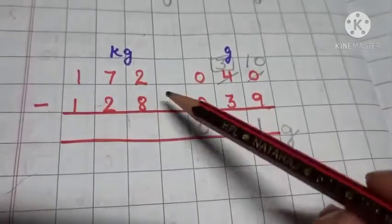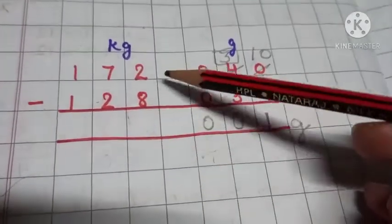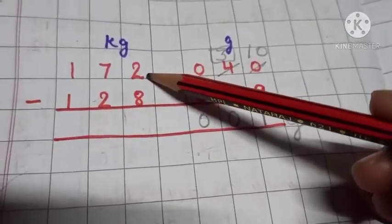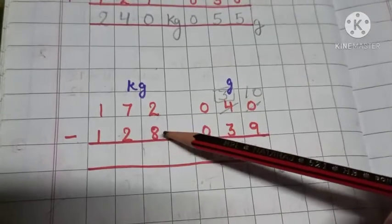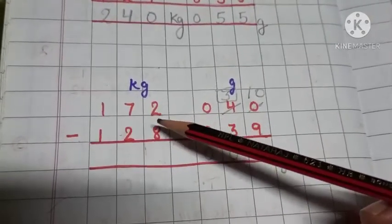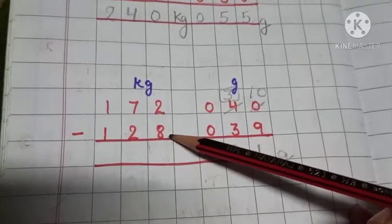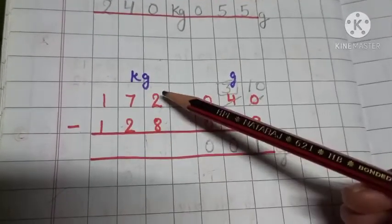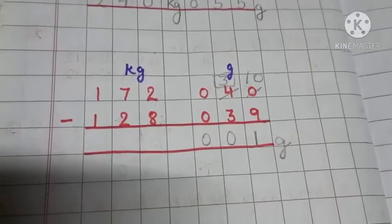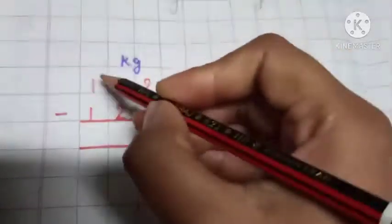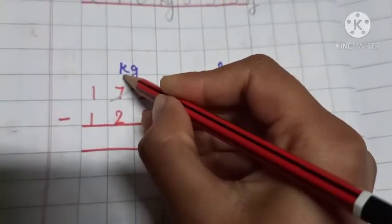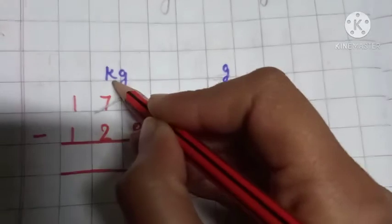Now, let's subtract the values of kilogram. First, we subtract 8 from 2. Look here. The 8 is greater than 2. It means the value at the bottom is greater than the value on the top. So here, we need to borrow a number. We borrow a number from 7. So when we borrow a number, here we are left with 6.